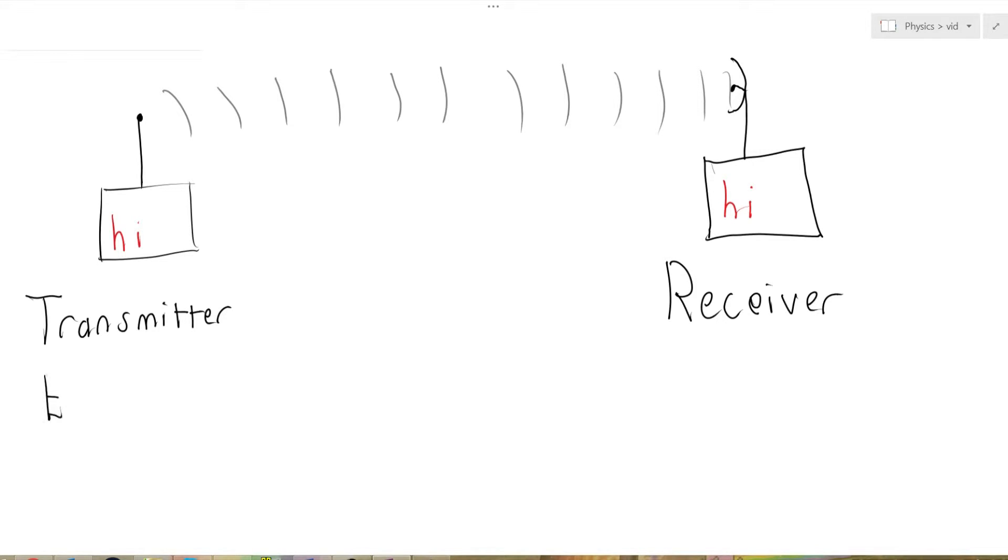The transmitter is a transducer that turns electrical energy in the form of your message into electromagnetic waves which fly through the air. The receiver turns those electromagnetic waves back into electrical energy in the form of a message.